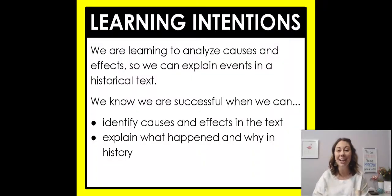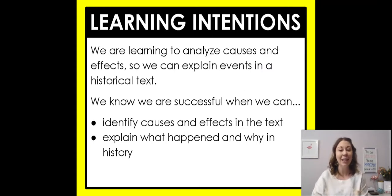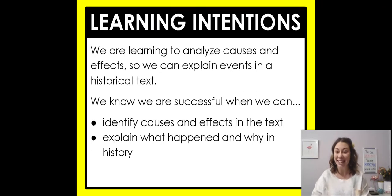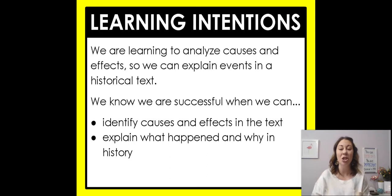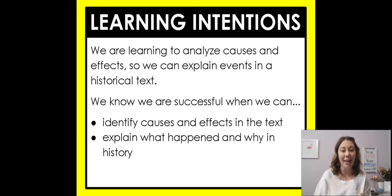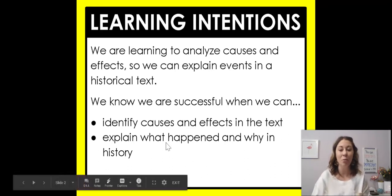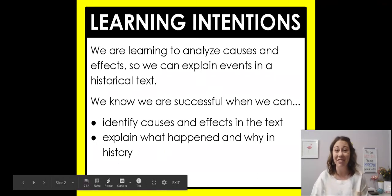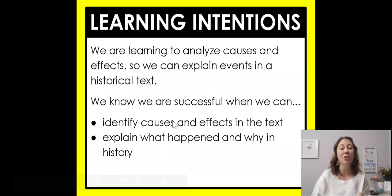Our learning intentions for today are that we are learning to analyze causes and effects so we can explain events in historical text. This is an informational text based on real history, and so we have to explain what is happening and why. That is one of our success criteria — what happened and why did it happen. That's the cause and the effect, and we'll get into that at the end of our lesson.